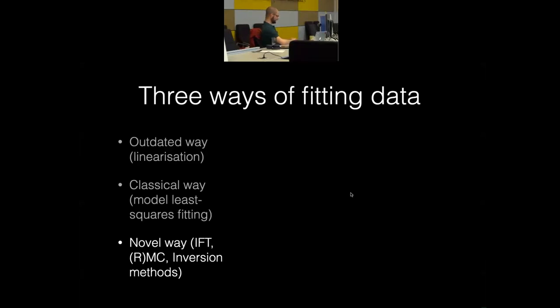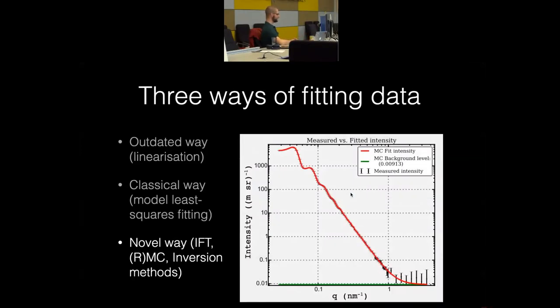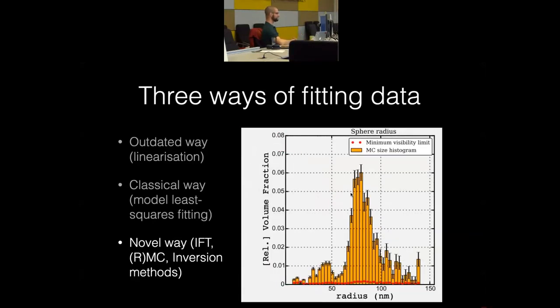There have been a couple of approaches proposed in the past with inverse Fourier transforms, reverse Monte Carlo procedures and other inversion methods which can take your data and invert it to give you information out. We programmed one of these. It is called MaxSAS. This can fit most datasets very well to within the uncertainty of the data and gives you out a size distribution of your object. So, you have to tell it in this case what shape your scatterer is and then it will give you a size distribution.